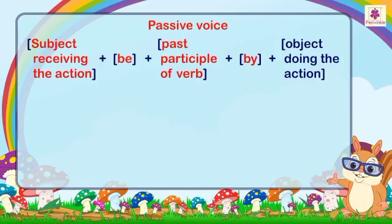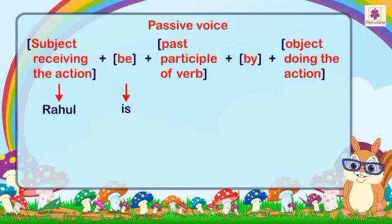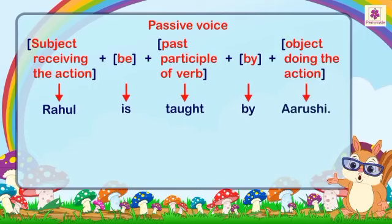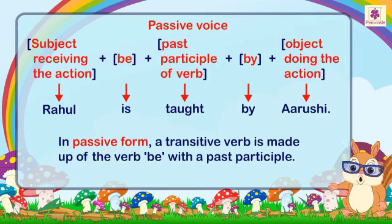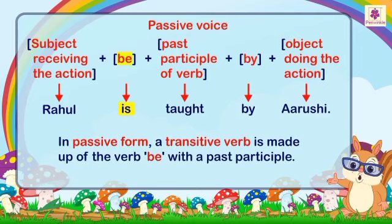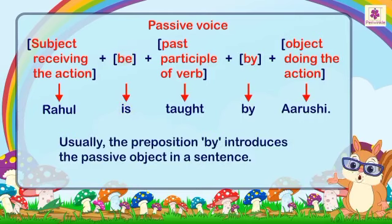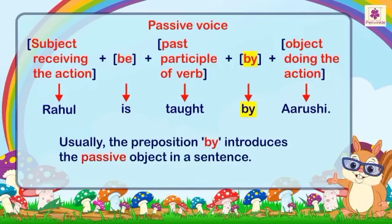The passive pattern continues: by + object (doing the action). For example: Rahul is taught by Arushi. In passive form, a transitive verb is made up of the verb 'be' with a past participle. Usually, the preposition 'by' introduces the passive object in a sentence.